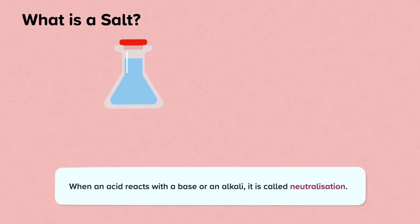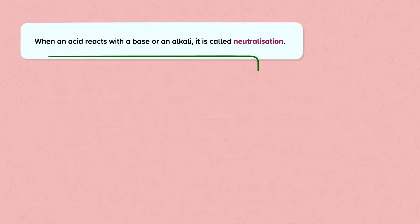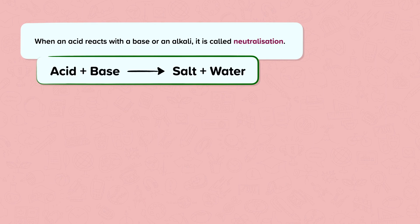So what is a salt? A salt is formed during a chemical reaction when you mix an acid with a base or an alkali. When an acid reacts with a base or an alkali it is called neutralization. If the acid is added to the base we say that the acid neutralizes the base. If a base is added to the acid we say that the base neutralizes the acid. The general word equation for a neutralization reaction is: acid plus base will react together to produce a salt plus water.